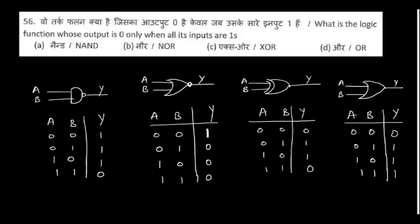What is the logic function whose output is 0 only when all its inputs are 1? I have provided the truth tables — you can answer it yourself by reviewing them.